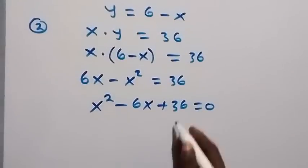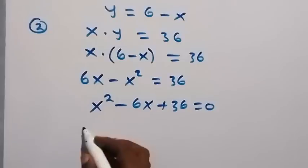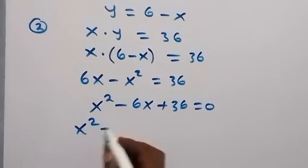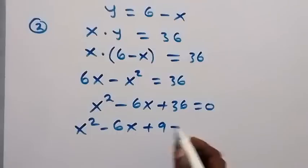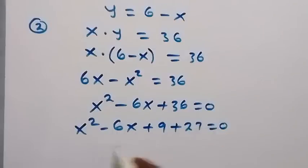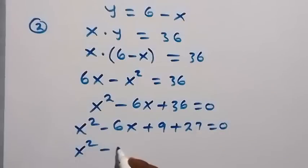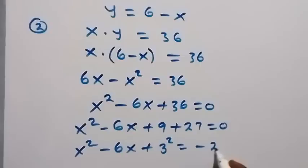The next step, let's separate this 36 as 9 plus 27. And that will become x squared minus 6x plus 9 plus 27 then equals to 0. And from here, we can bring 27 to this side. And this will become x squared minus 6x plus 9, which can be written as 3 squared, then equals to minus 27.